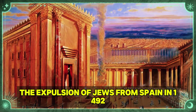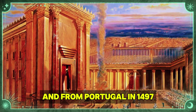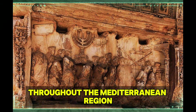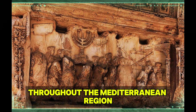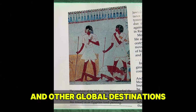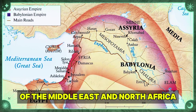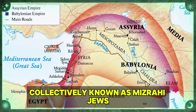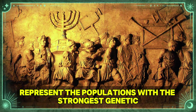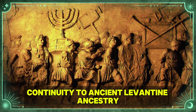The expulsion of Jews from Spain in 1492 and from Portugal in 1497 scattered Sephardic populations throughout the Mediterranean region, the Ottoman Empire, and eventually to the Americas and other global destinations. The Jewish communities of the Middle East and North Africa, collectively known as Mizrahi Jews, represent the populations with the strongest genetic continuity to ancient Levantine ancestry.